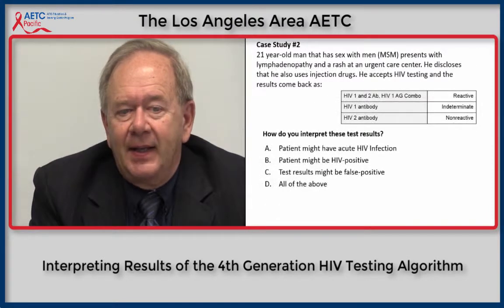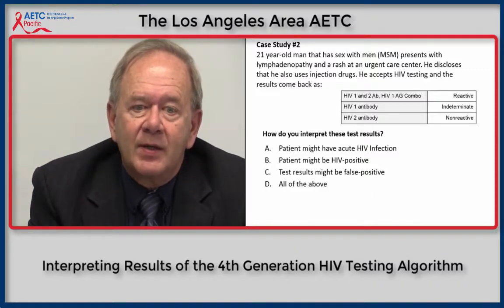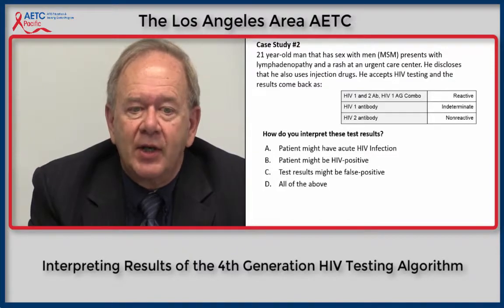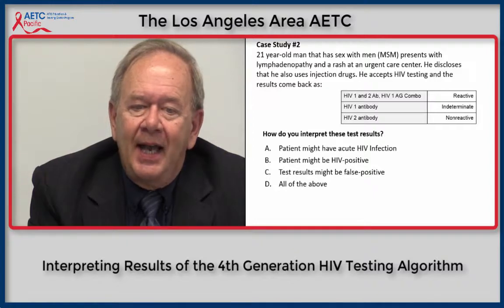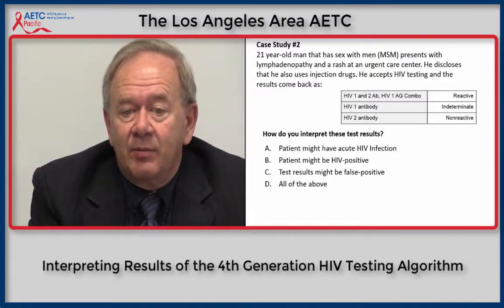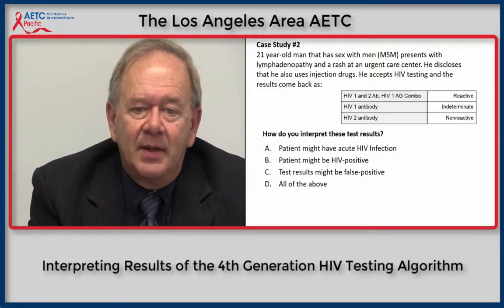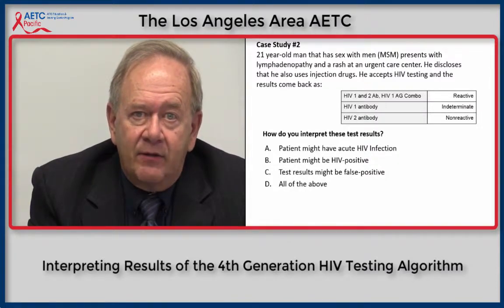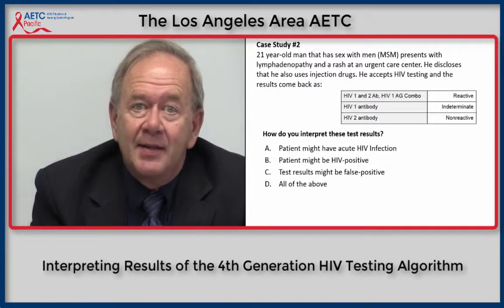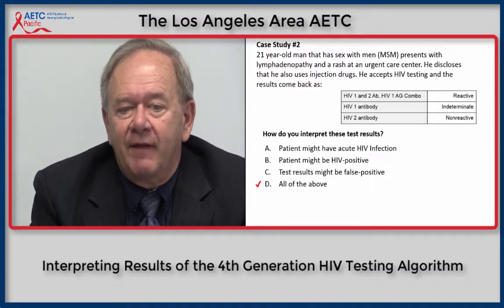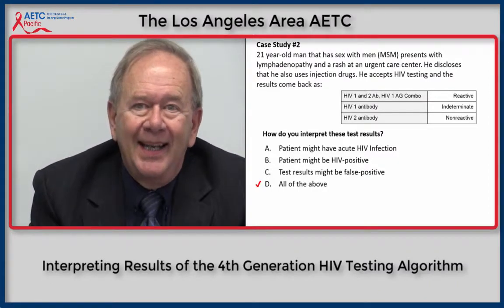Case study two: a 21-year-old man who has sex with men presents with lymphadenopathy and a rash at an urgent care center. He also discloses injection drug use. He accepts HIV testing and his results are: HIV-1/2 antibody-antigen combination test is reactive; his HIV-1 antibody result is indeterminate; and his HIV-2 antibody result is non-reactive. The correct answer is D — all of the above. This sequence means the patient might have acute HIV infection, might be HIV positive with established infection, or the results might be false positive.